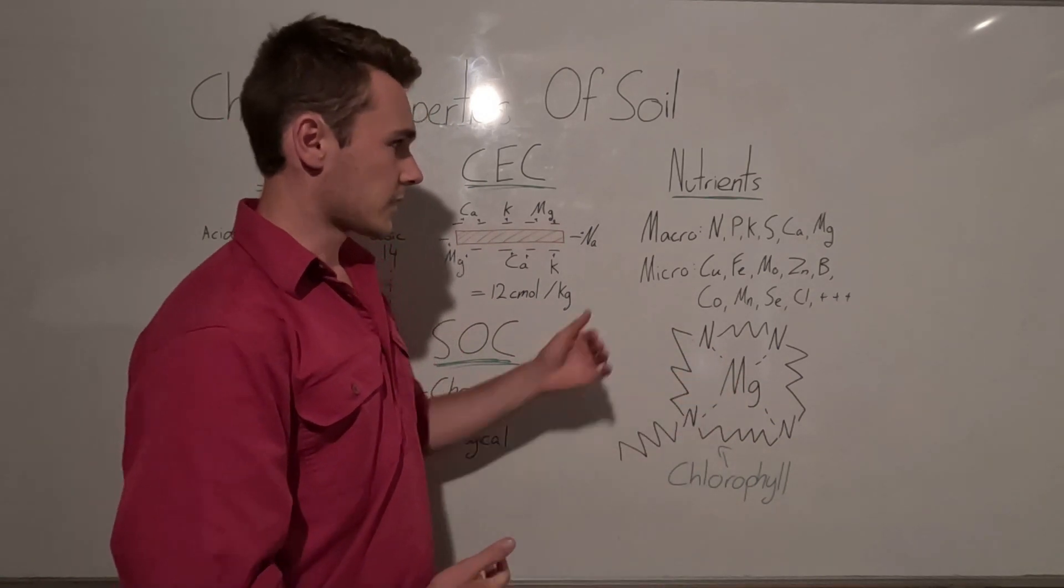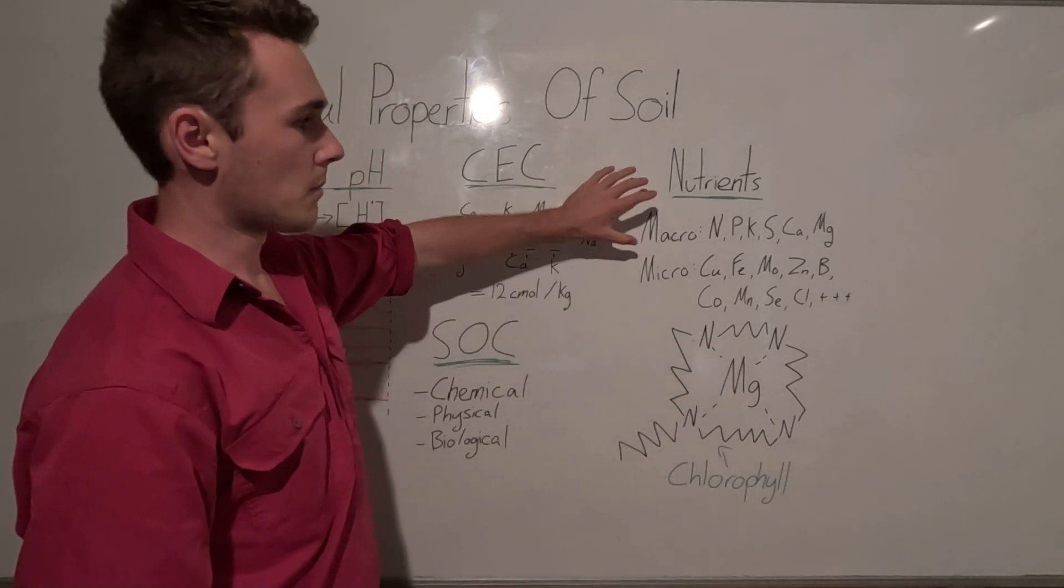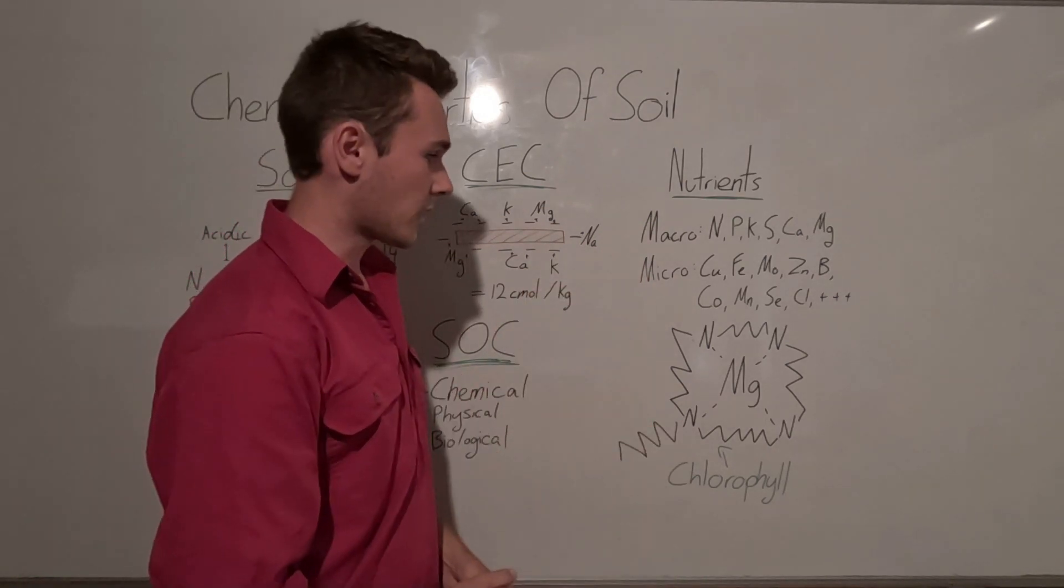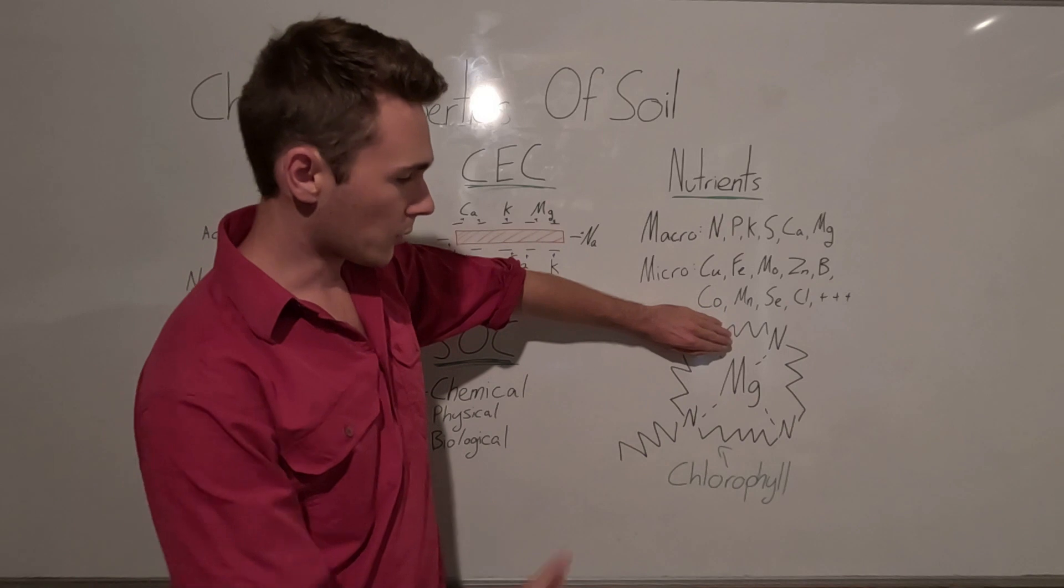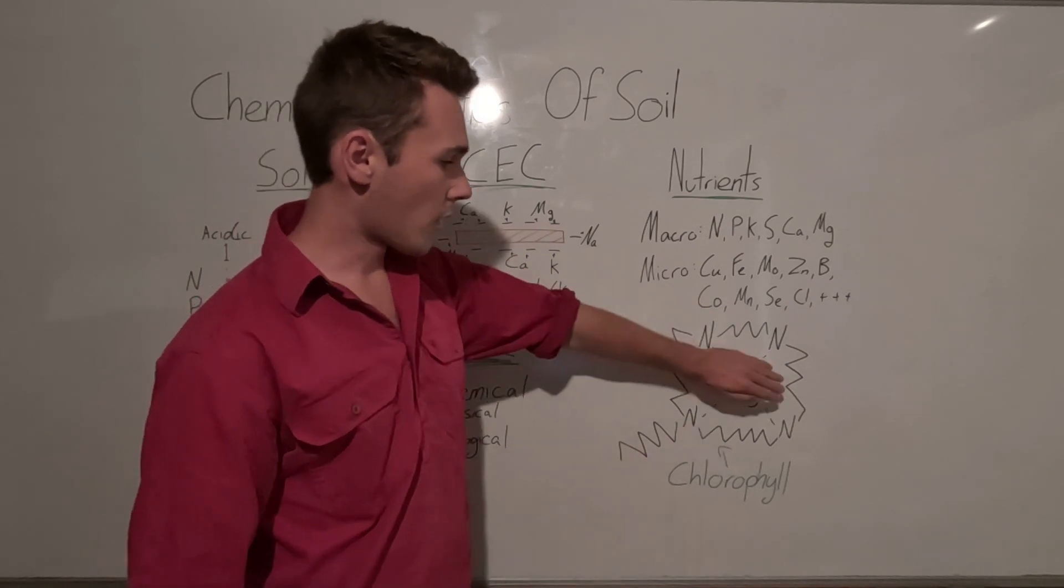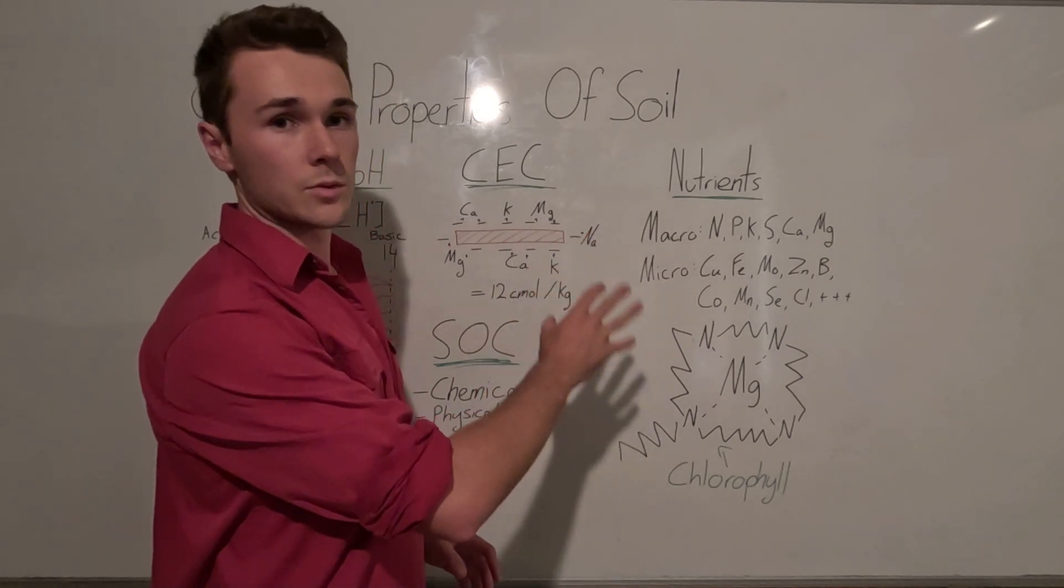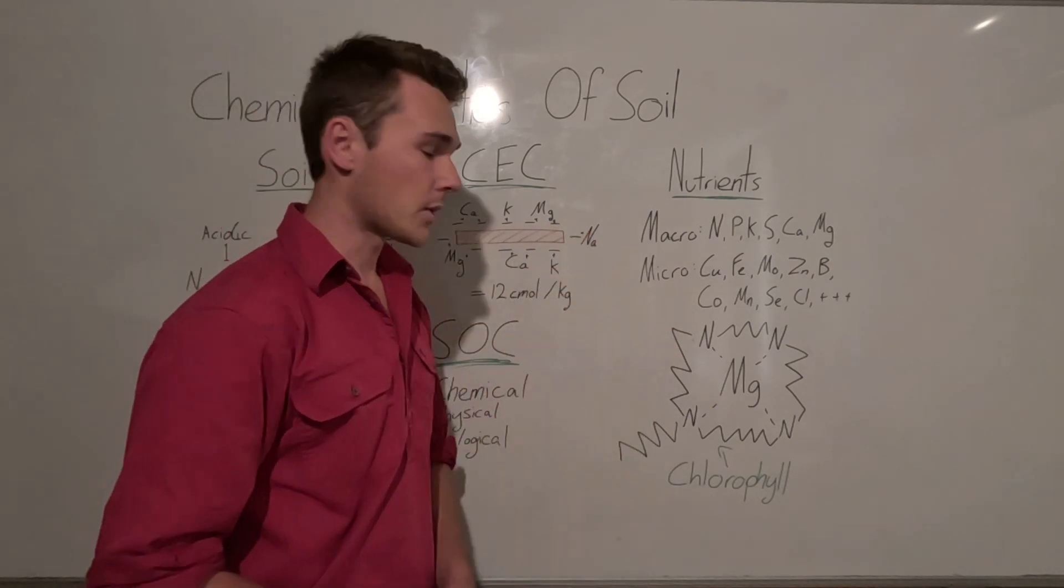And so as I was saying before, we need a lot more macros than micros, but they're still just as important as each other. So if we only had three nitrogen it wouldn't work. If we had no magnesium then it wouldn't work. And so they're all important and they all need to be available to our plant so that they can build their bodies.